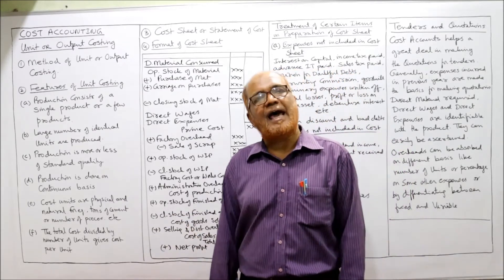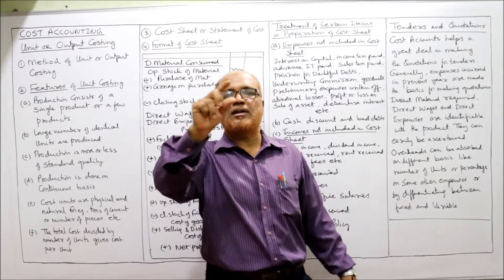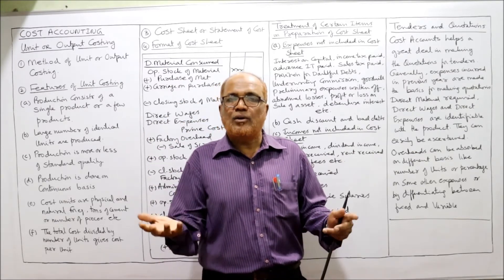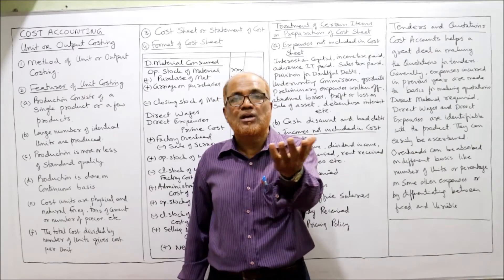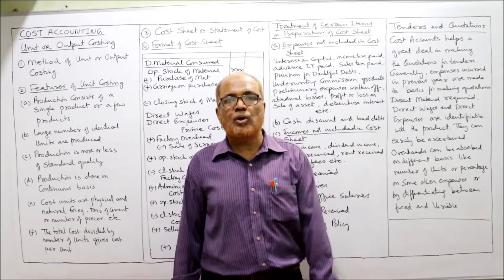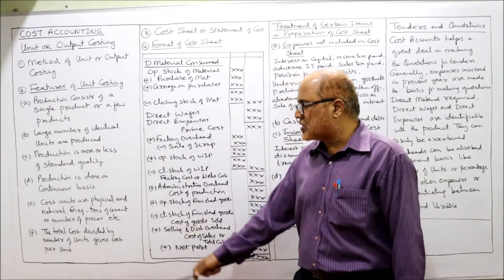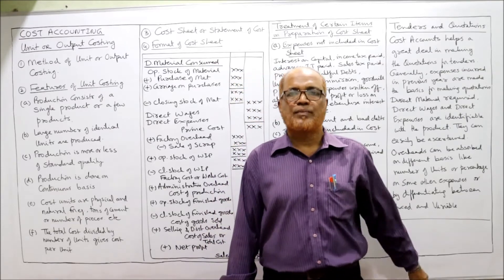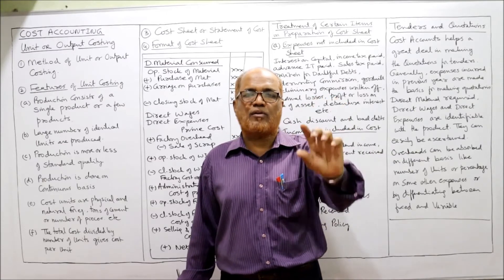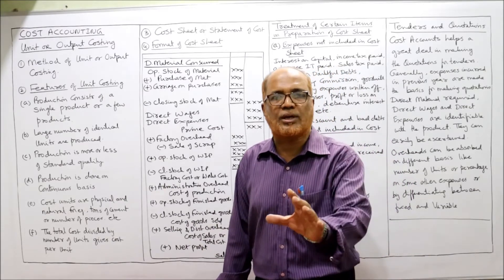Fifth, cost units are physical and natural. To find cost per unit, take the total cost divided by the number of units. The physical units are natural — for example, number of pieces or tons of cement produced. So total cost divided by number of units gives cost per unit. These are the main features of unit or output costing.